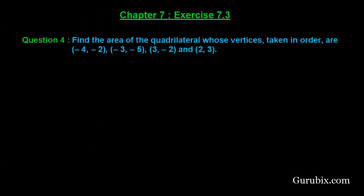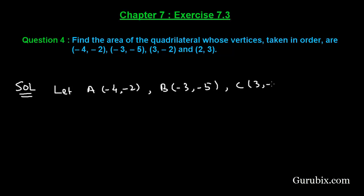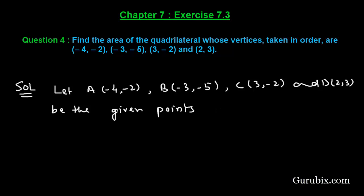Welcome friends. Let us solve question number 4 of exercise 7.3 of chapter 7. The question says: find the area of the quadrilateral whose vertices taken in order are (-4, -2), (-3, -5), (3, -2), and (2, 3). Let A = (-4, -2), B = (-3, -5), C = (3, -2), and D = (2, 3) be the given points.